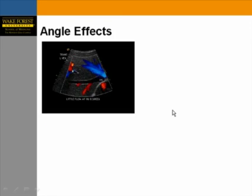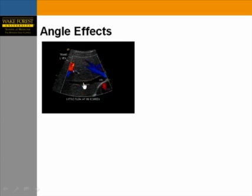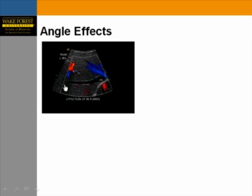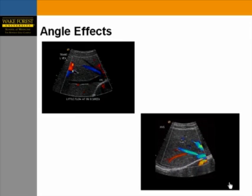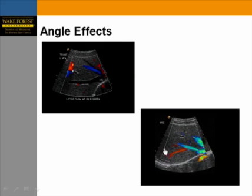Looking at this slide, the hepatic veins are nicely identified by color Doppler, particularly the middle and left. The right hepatic vein shows no blood flow — but don't jump to the conclusion there is a clot. First, change your angle. Changing the acoustic window reveals a nicely filling right hepatic vein with no evidence of clot or abnormality.